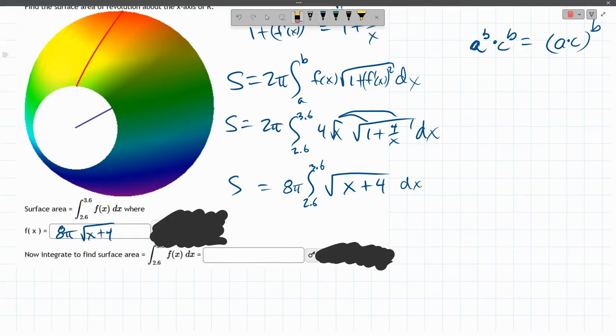And hopefully, when I uncover this, I get the same thing. Yes. So remember, 4 squared is 16 over 4 is 4. All right. So that's the same thing.